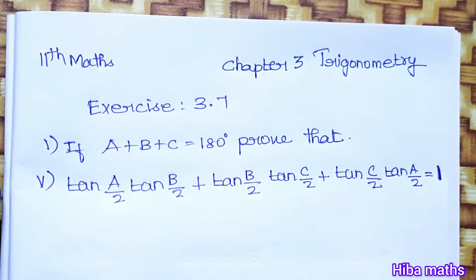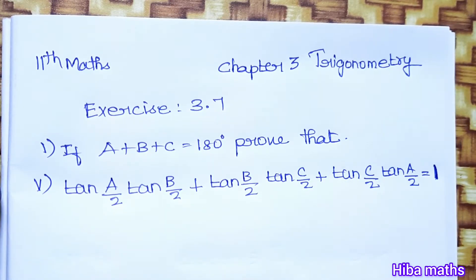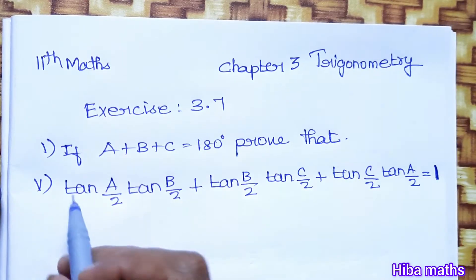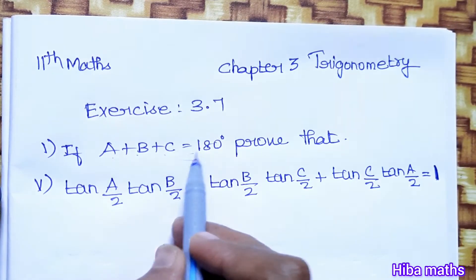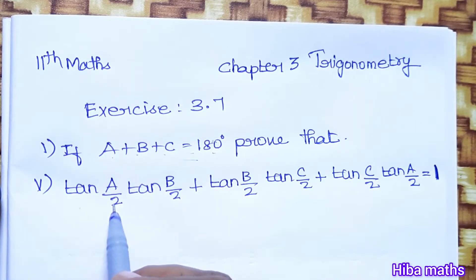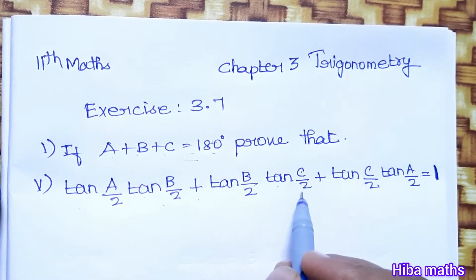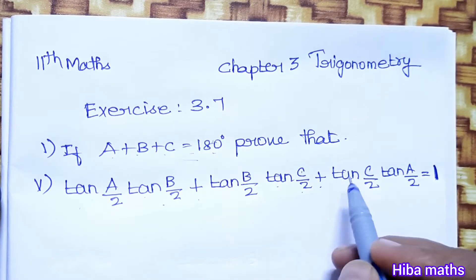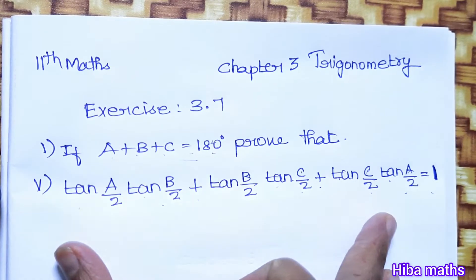Hello students, welcome to Hibamax 11th standard, Chapter 3 Trigonometry, Exercise 3.7, first question. We have a condition: a plus b plus c is equal to 180 degrees. Prove that tan(a/2)·tan(b/2) + tan(b/2)·tan(c/2) + tan(c/2)·tan(a/2) is equal to 1.